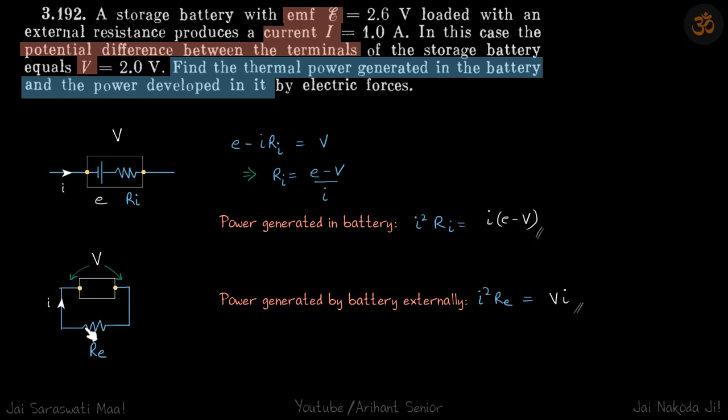So here the potential across the terminals is V. Let's write that equation. Starting from here, E minus IRI equals V, which gives RI equals (E minus V) divided by I.